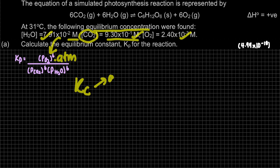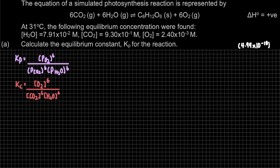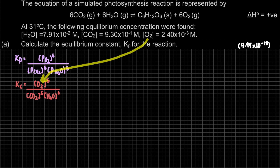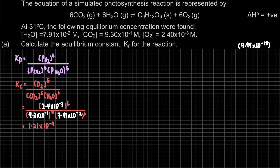Kc applies to gas and aqueous species. We write products over reactants, and if there are stoichiometric coefficients in front, we raise to that power. Once we substitute O₂, CO₂, and H₂O with their given equilibrium concentrations, we get Kc = 1.21×10⁻⁹.